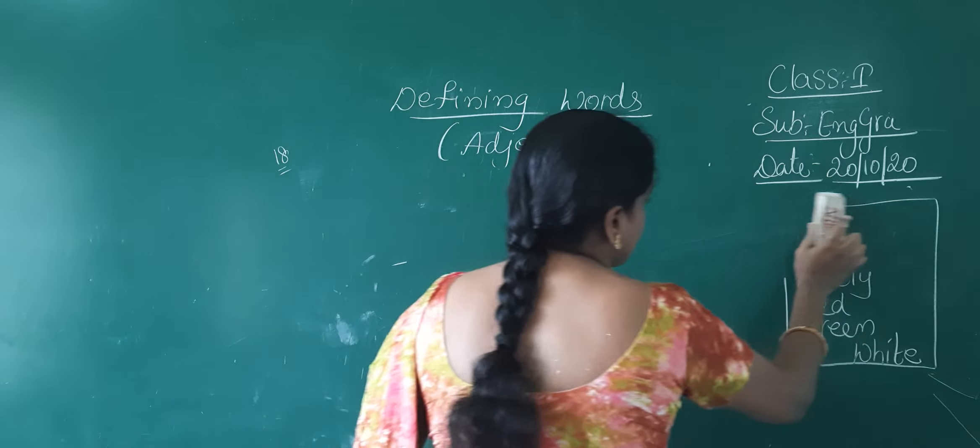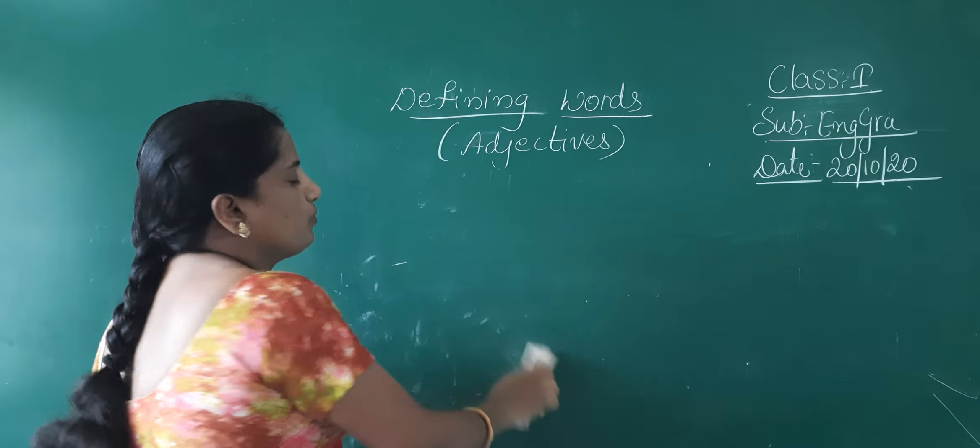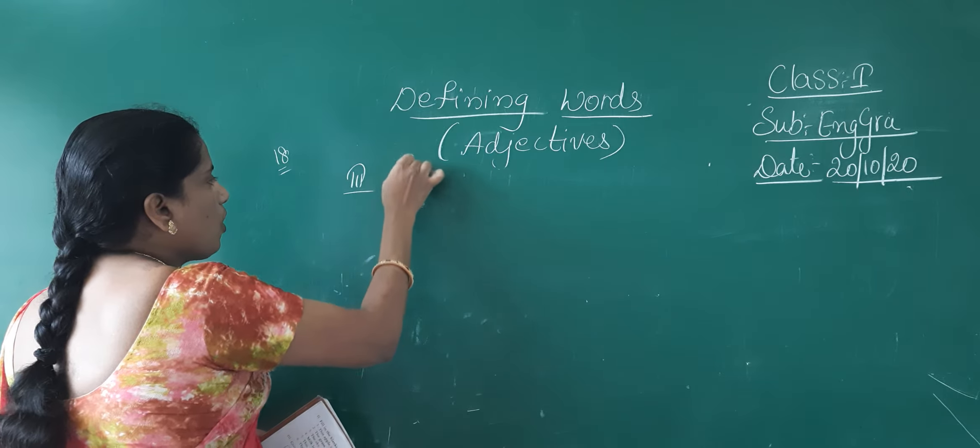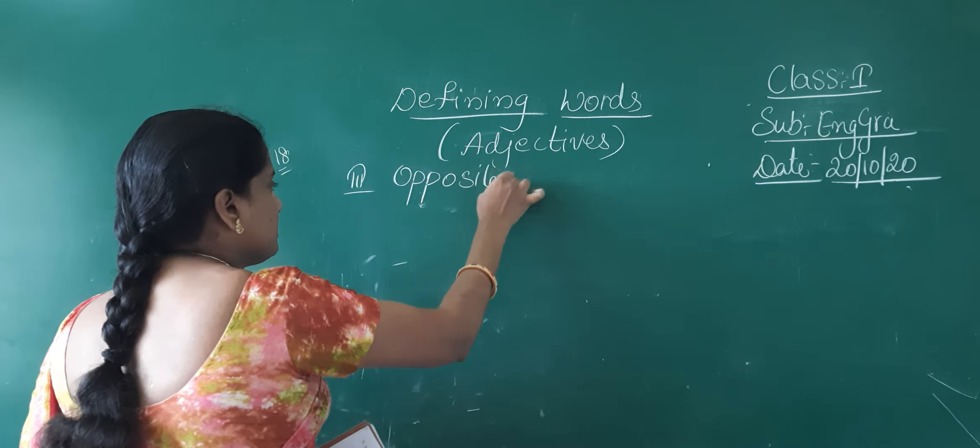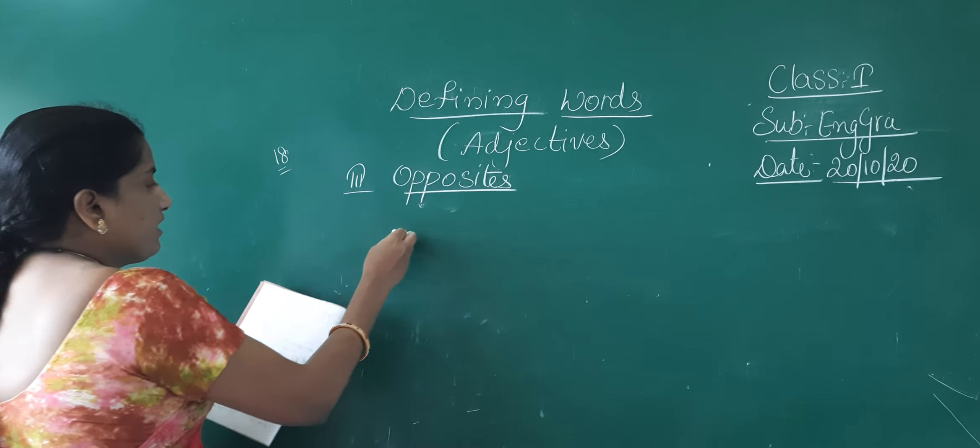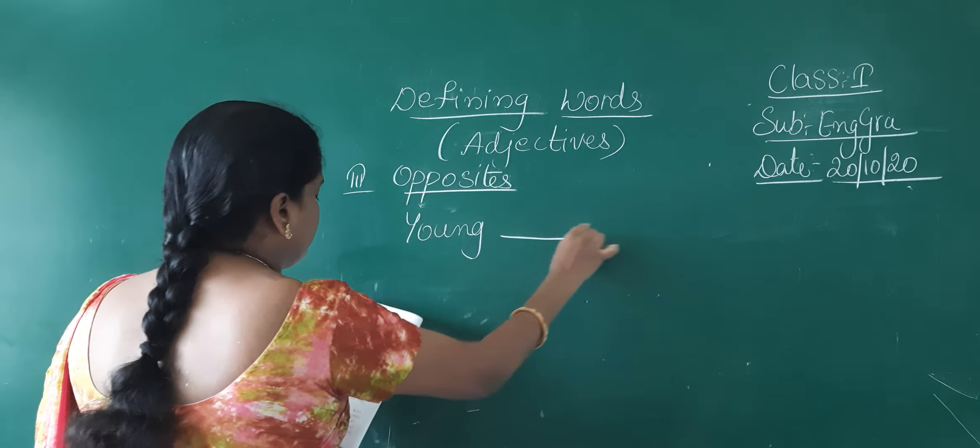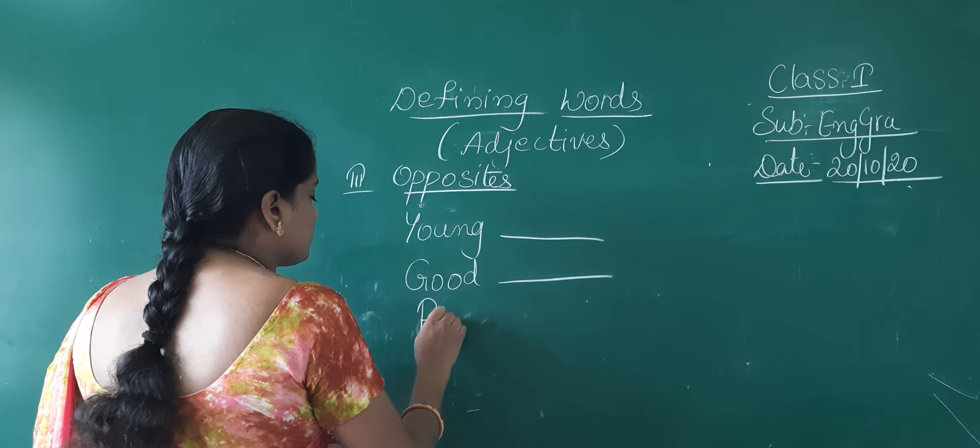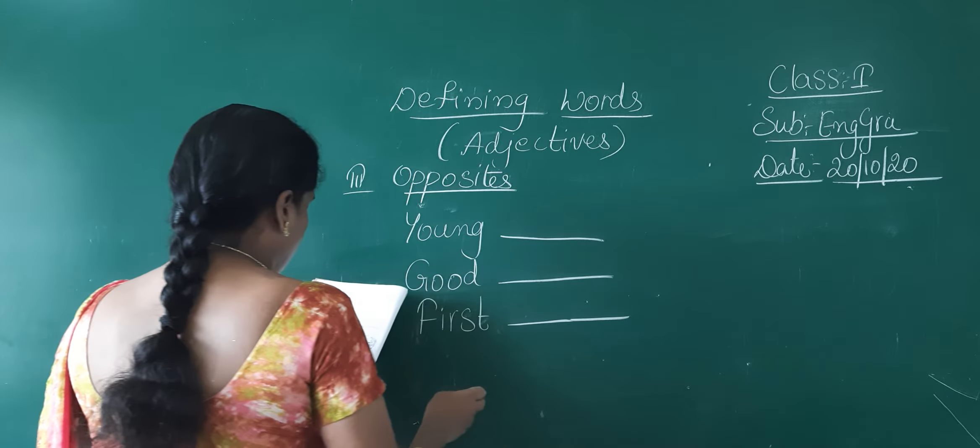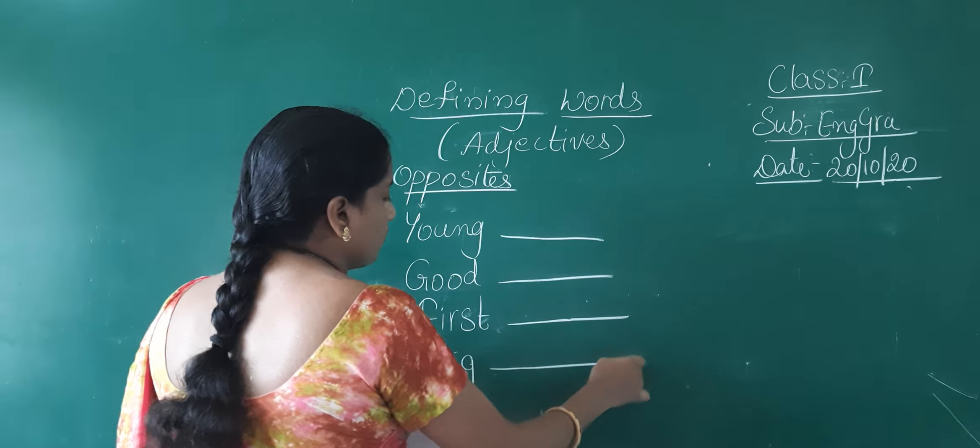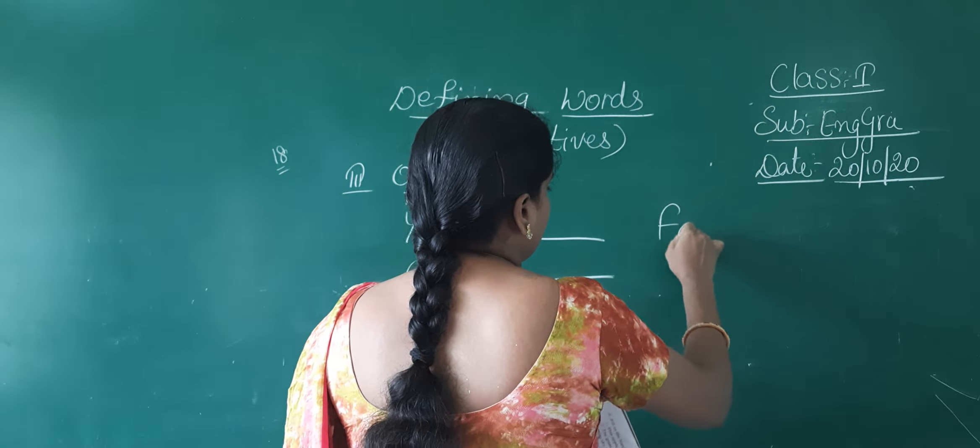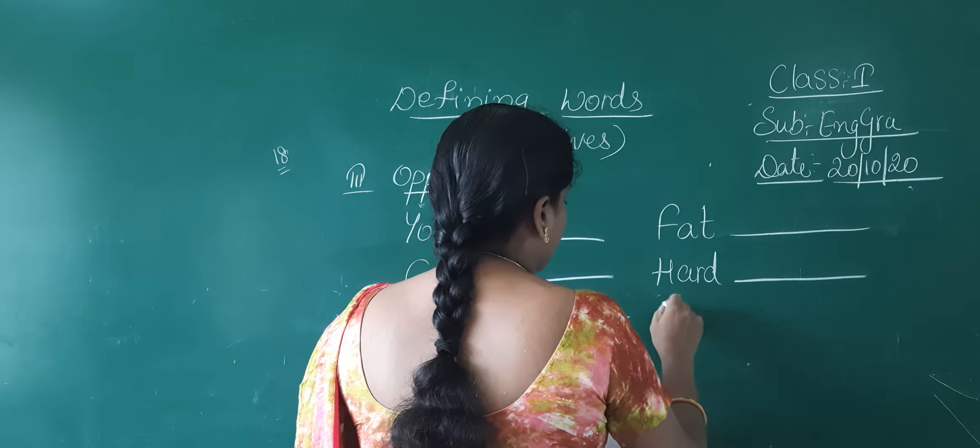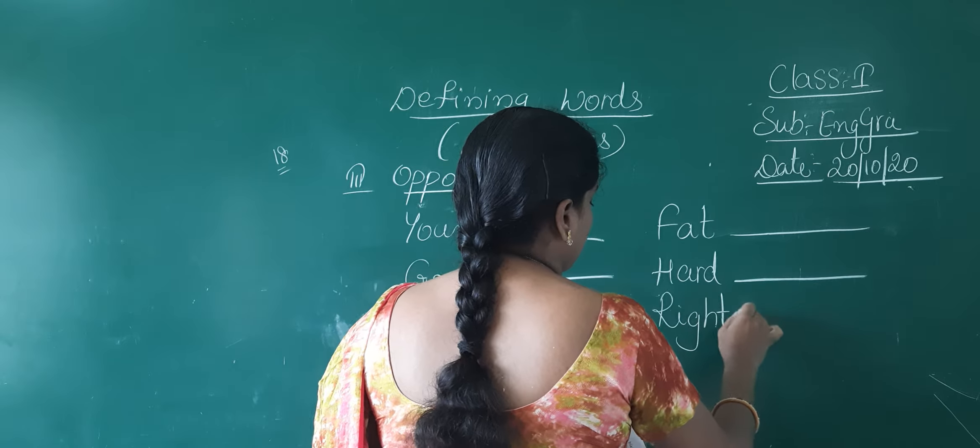Now let us discuss the next exercise. Opposites. They have given us some adjectives and they have told us to write the opposites. Easily we can write children. Third Roman, opposites. First one they gave us young. Second one, good. Third one, fast. Fourth one, big. Fifth one, fat. Sixth one, hard. Seventh one, right.